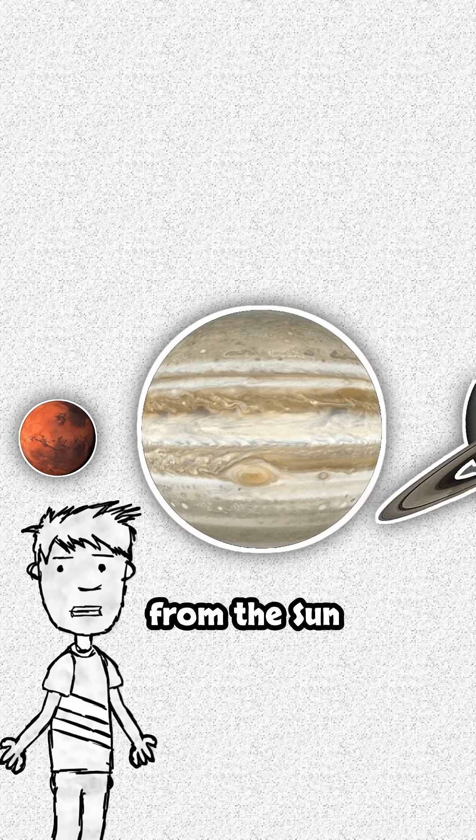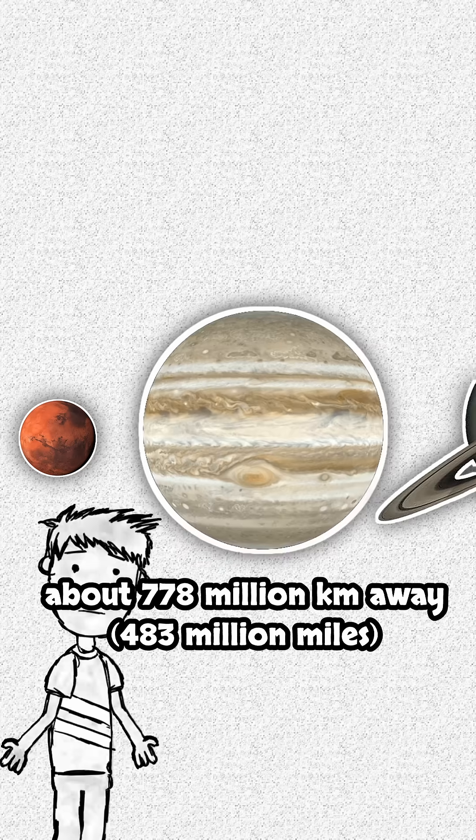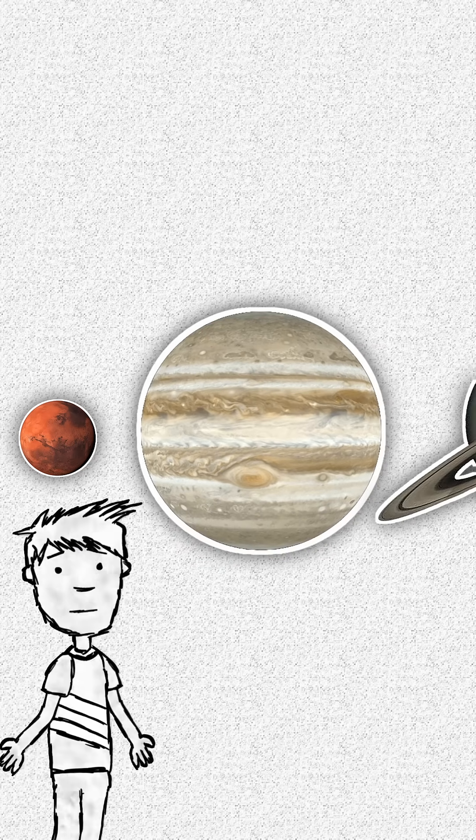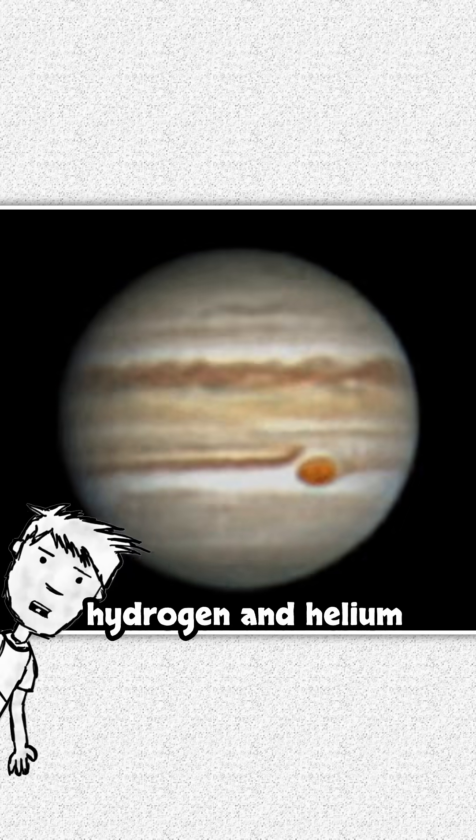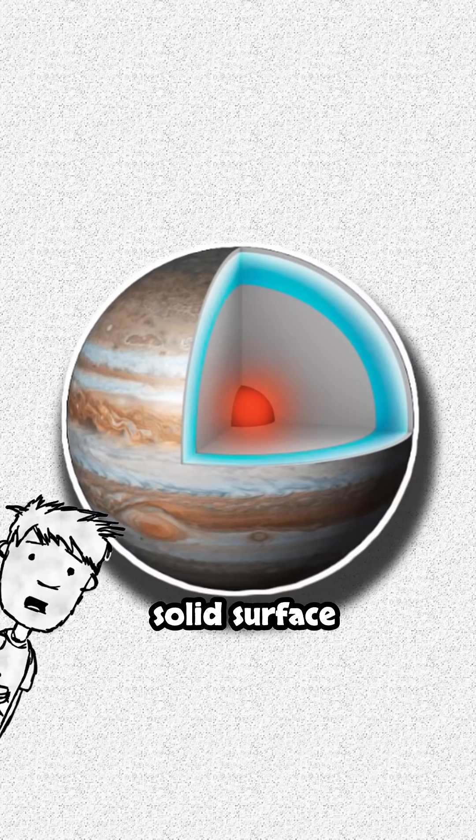It's the fifth planet from the Sun, about 778 million kilometers away. It's a gas giant made mostly of hydrogen and helium. Jupiter has no solid surface.